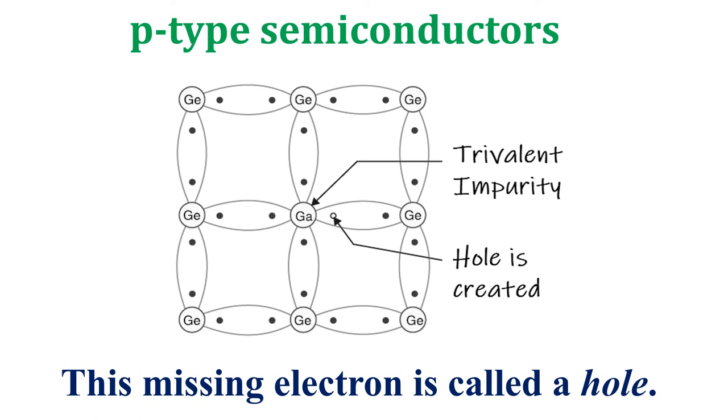Therefore, for each gallium atom added, one hole is created. A small amount of gallium provides millions of holes. The current conduction in p-type semiconductor is predominantly by holes, that is positive charges, and is called p-type or hole-type conductivity.